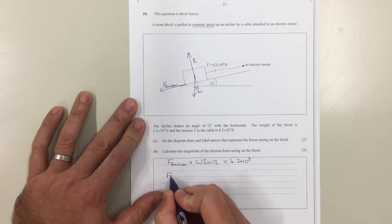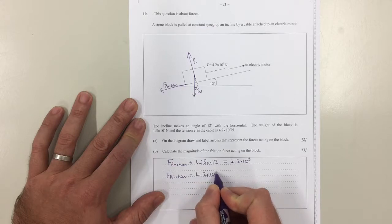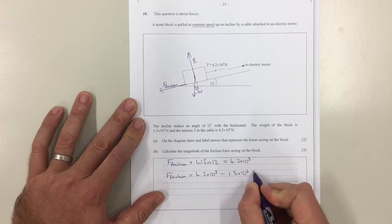So F friction equals 4.2 times 10 to the 3 minus 1.5 times 10 to the 4 times sine 12.